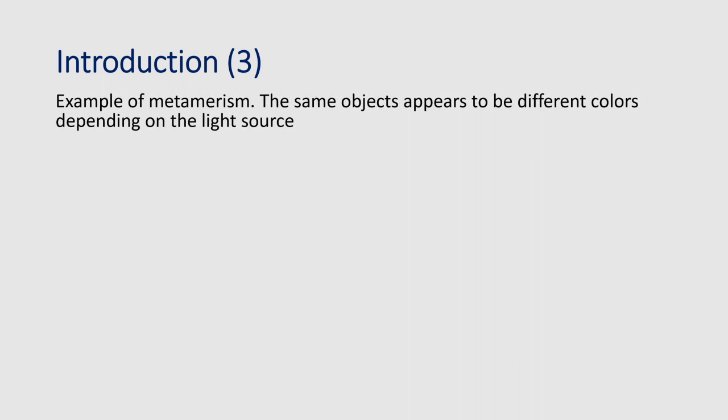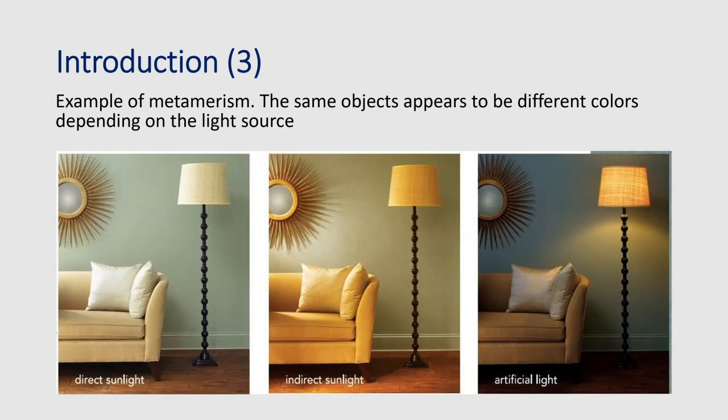Taking an example of metamerism to simplify: the same objects appear to be different colors depending on the light source. We have the same object reflecting energy in different ways because the illuminant is changing, and it appears different to our eyes.